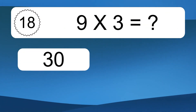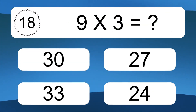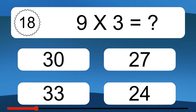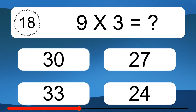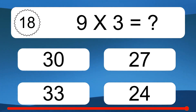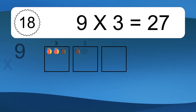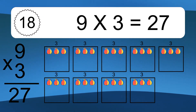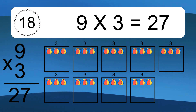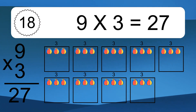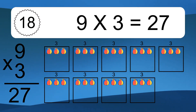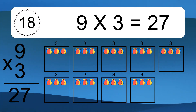9 times 3 equals what? 9 times 3 equals 27. We have 9 boxes, and each box has 3 colorful balls inside. If you count all the balls in all the boxes together, you will have 9 times 3 balls. This equals 27 balls.